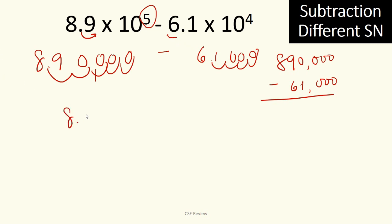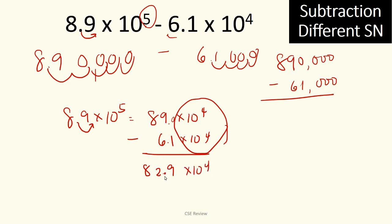Now, how do you do that? You can move this one once para maging raised to 4 or move this one once para pareho silang maging 5. For example, 8.9 times 10 to the 5th, we'll move it one decimal place to make it 89 times 10 to the 4th. And then you have minus 6.1 times 10 to the 4th. In this case, dahil pareho na sila ng last name, you can just subtract. This is going to give you 82.9. So, this is 89.0 carry, carry, 82.9 will come out. And then you have 82.9 times 10 to the 4th. And dahil meron kang isang sobra dito yung decimal point, we'll move it back, magiging 8.29 times 10 to the 5th. That is your answer.